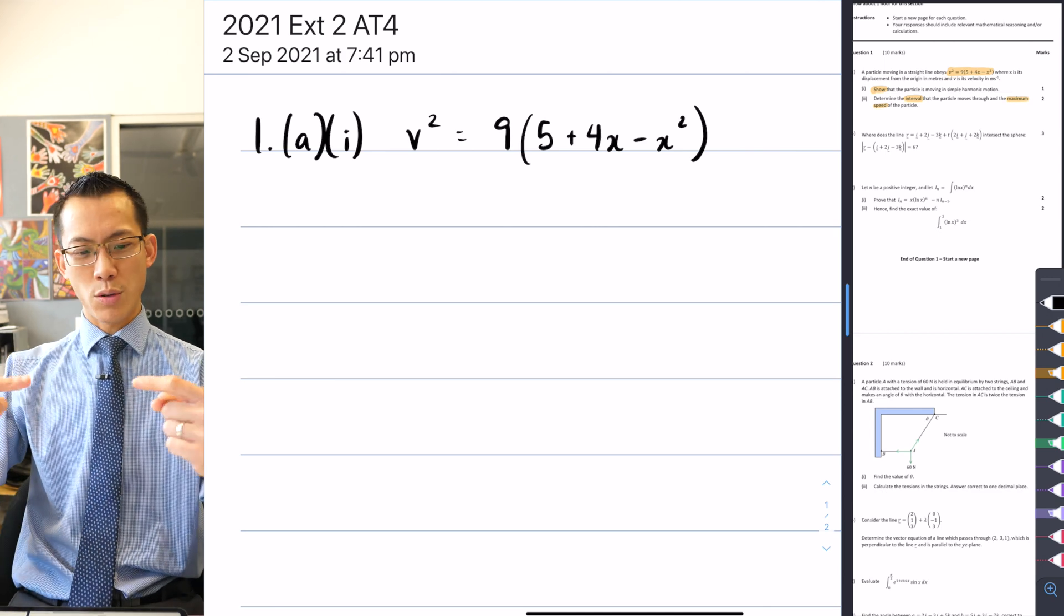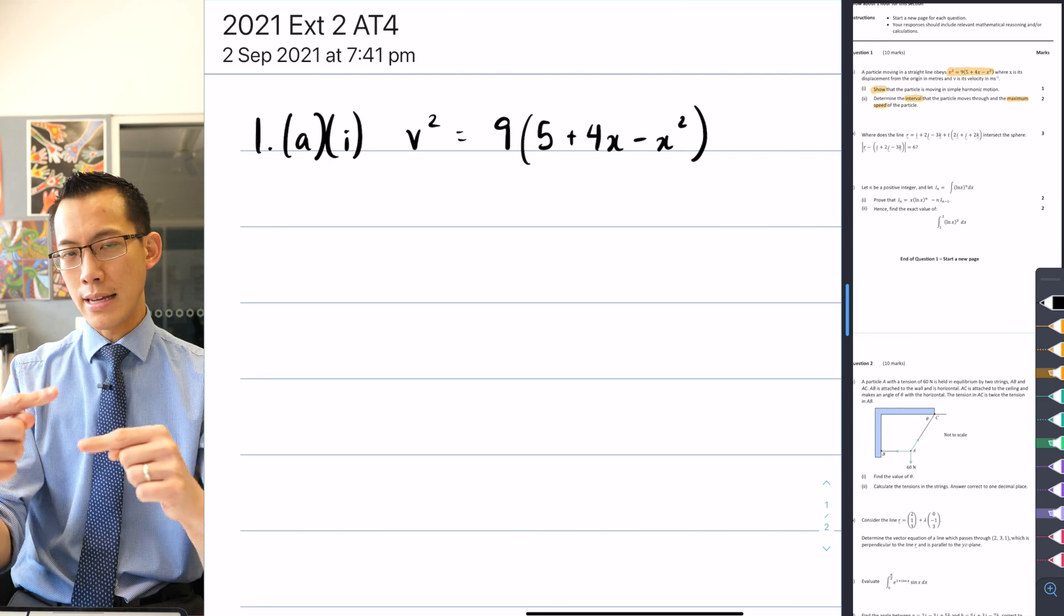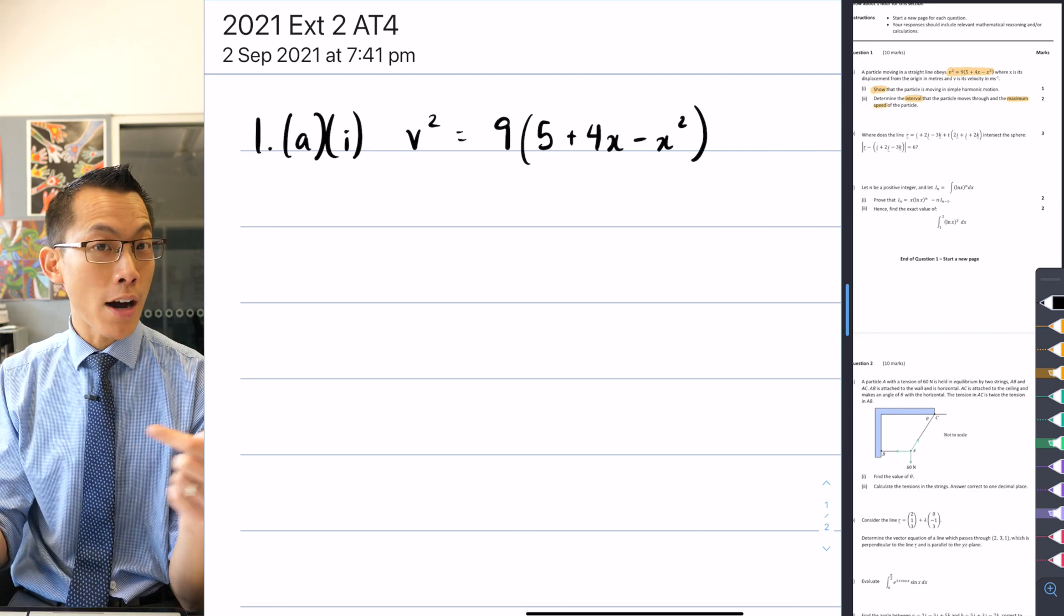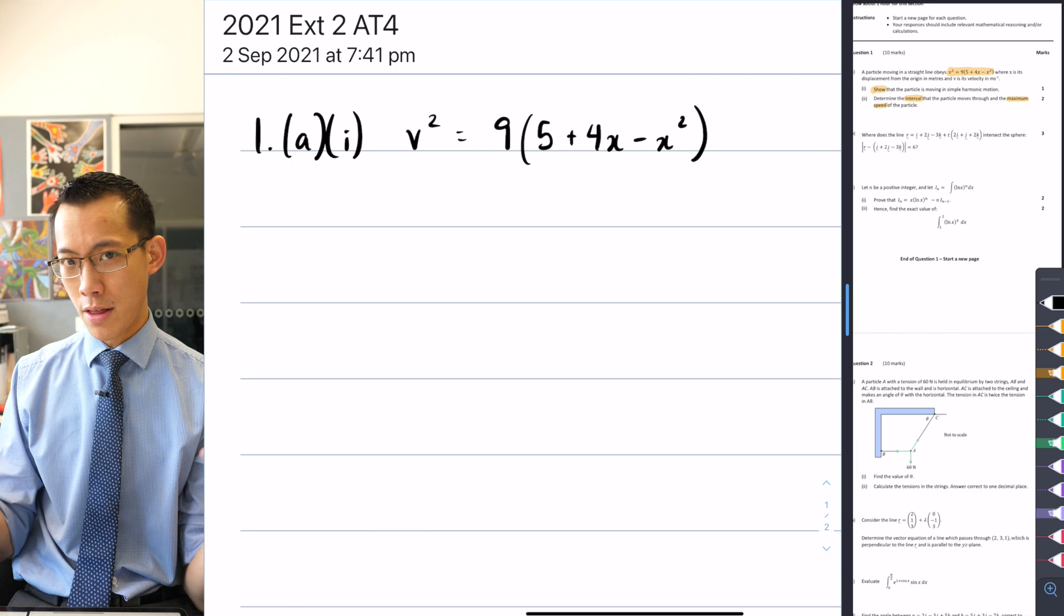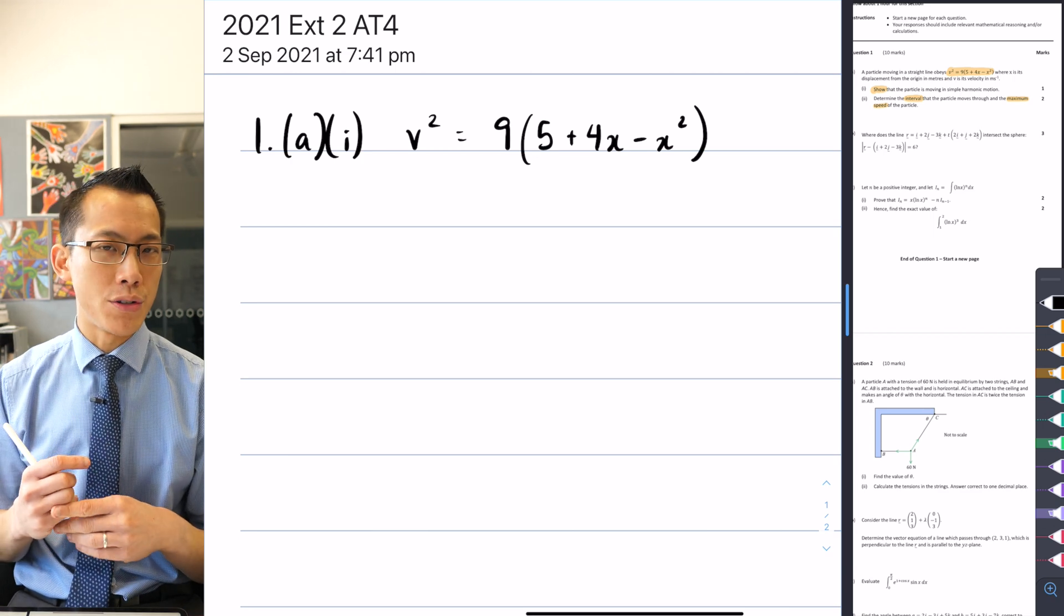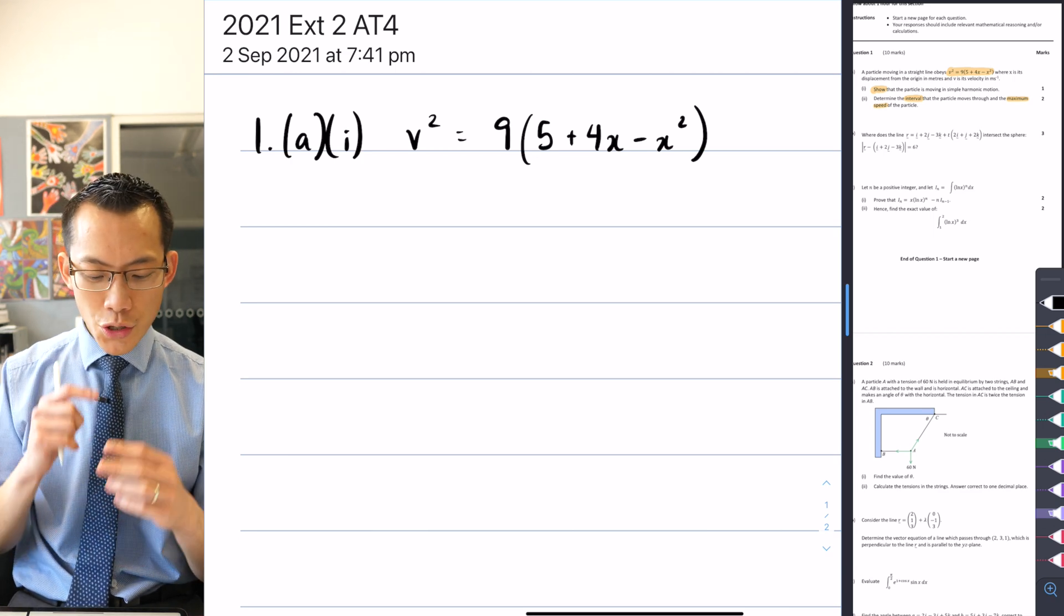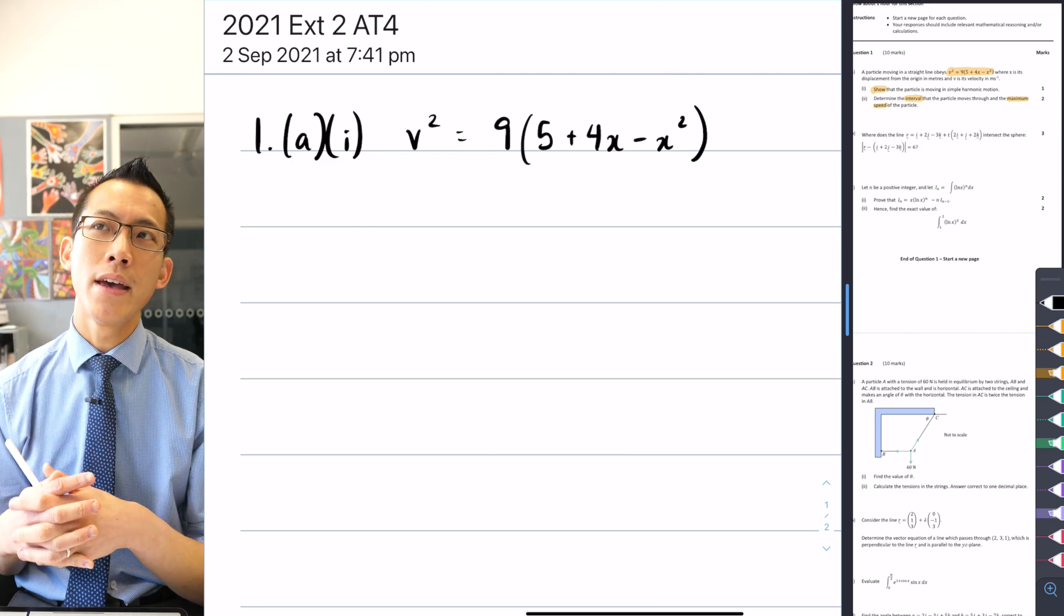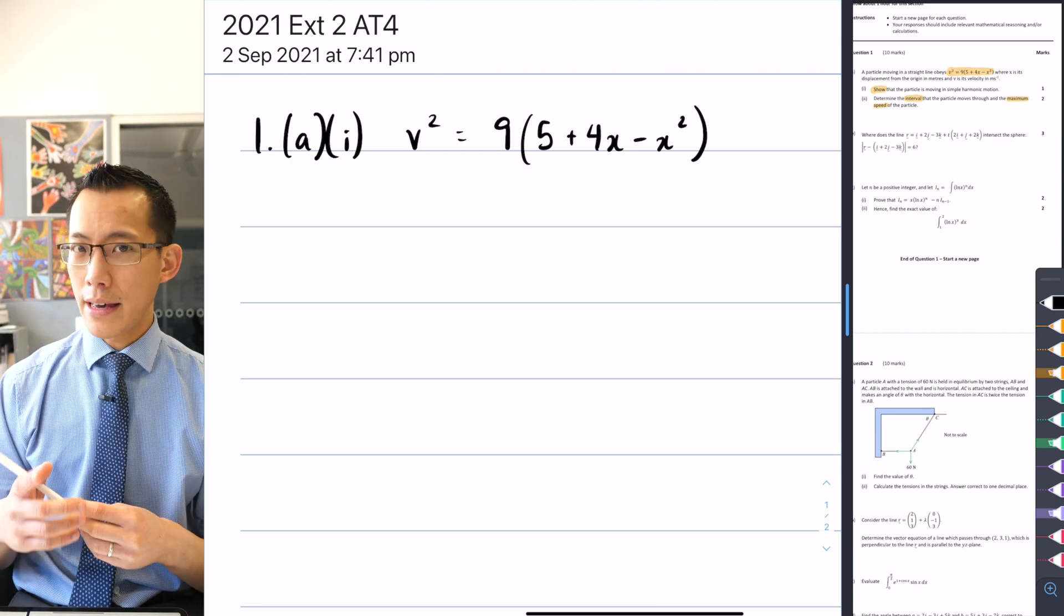And so that's sort of restoring force that's always pushing you back towards the center in proportion to how far you are from the center. The further away you are, the more it pushes you back, that's what produces simple harmonic motion. So I need to get from this equation, which is about v squared, into something that tells me about acceleration.